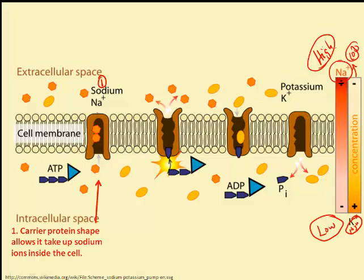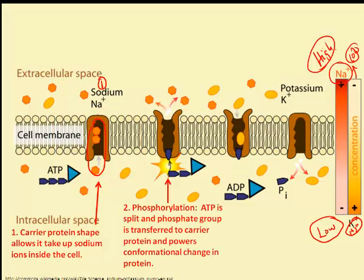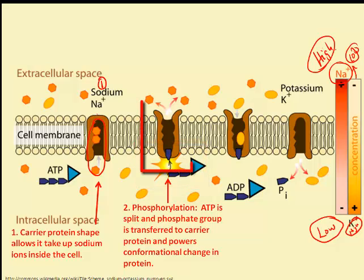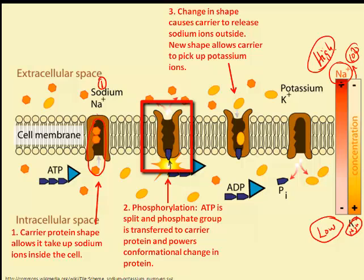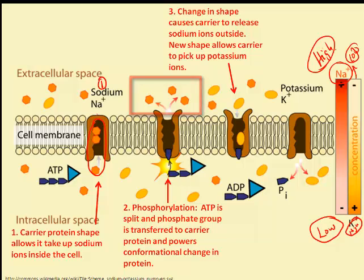In the first step, the carrier protein shape allows it to take up three sodium ions inside the cell. Phosphorylation occurs and ATP is split, and the phosphate group is transferred to the protein. This powers a conformational, or shape, change in the protein.